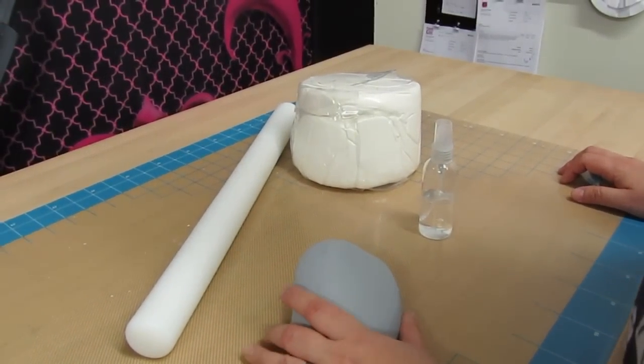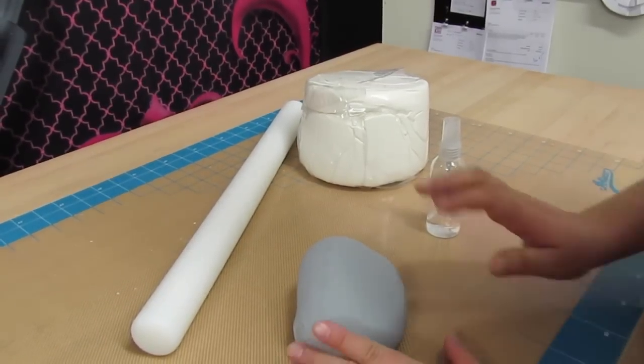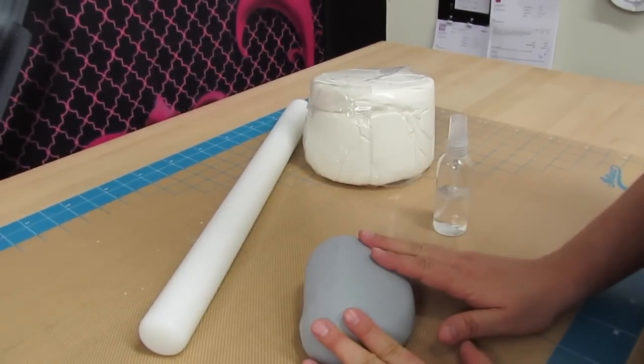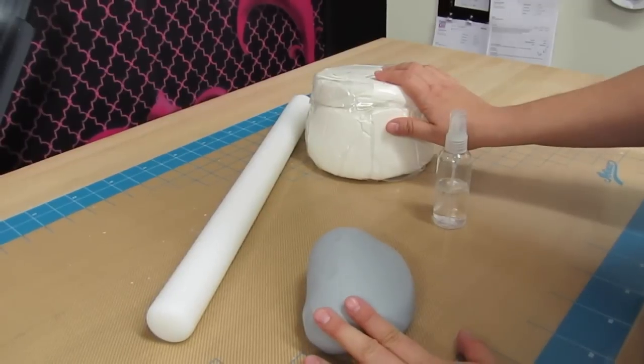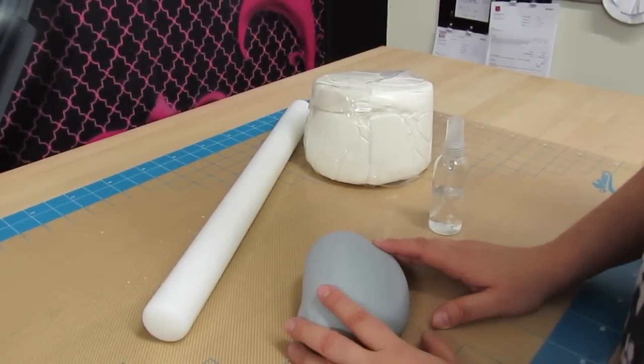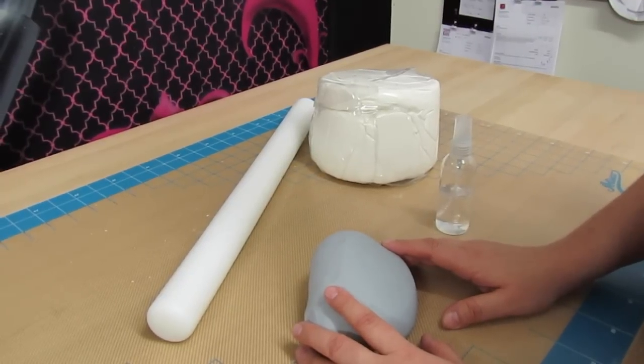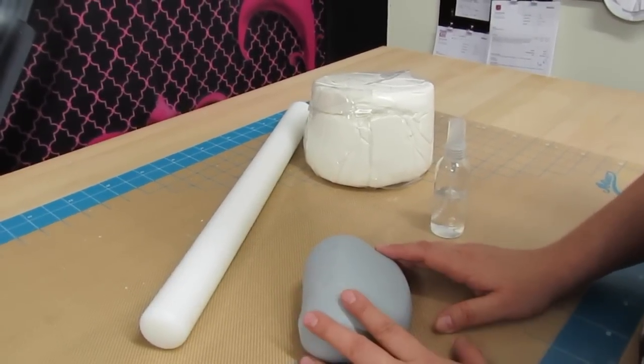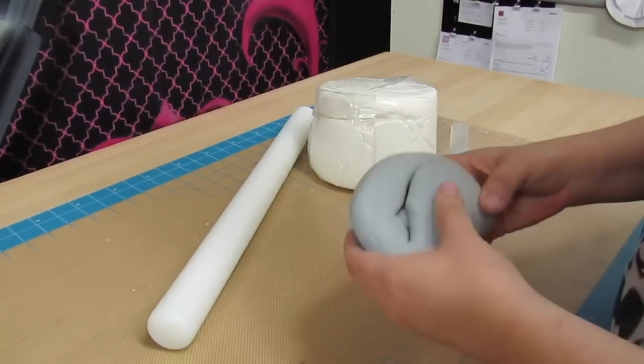Whenever you start taking your fondant out of the wrapping that it comes in, it immediately starts drying out. So also take into consideration all the time that you're going to spend rolling it out, and as you're doing that, your fondant is drying out.